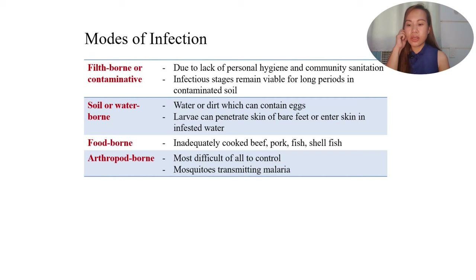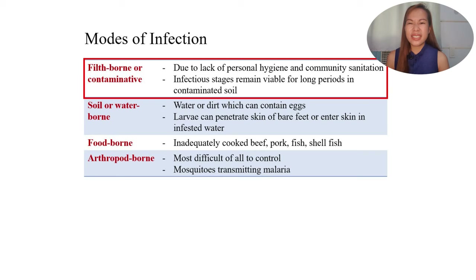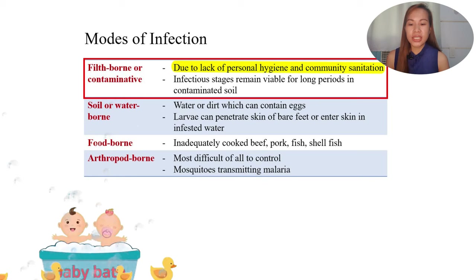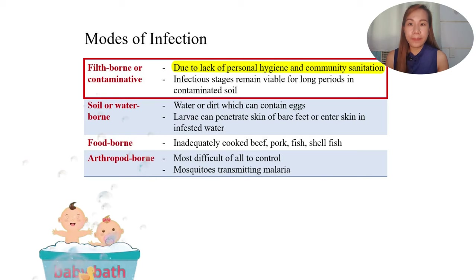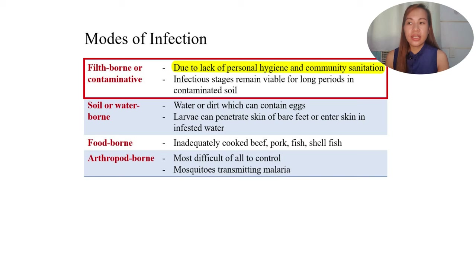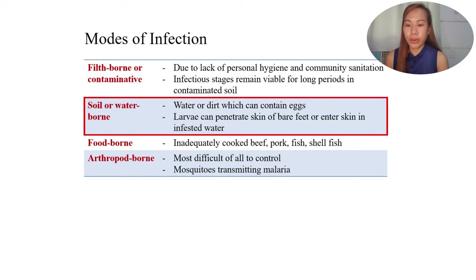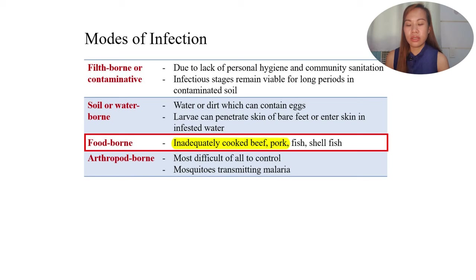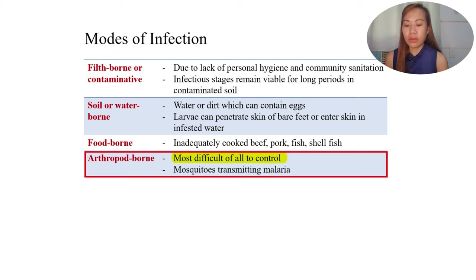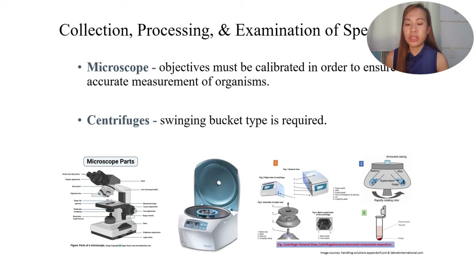There are different modes of infection. Filth-borne or contaminated modes relate to lack of personal hygiene and poor community sanitation — the infectious stage can remain viable for long periods in contaminated soil. Soil or water-borne modes occur when water or dirt contains eggs — larvae can even penetrate intact skin, especially through bare feet. Food-borne infection occurs through inadequately cooked beef, pork, fish, or shellfish. Arthropod-borne transmission, such as mosquitoes transmitting malaria, is the most difficult to control.